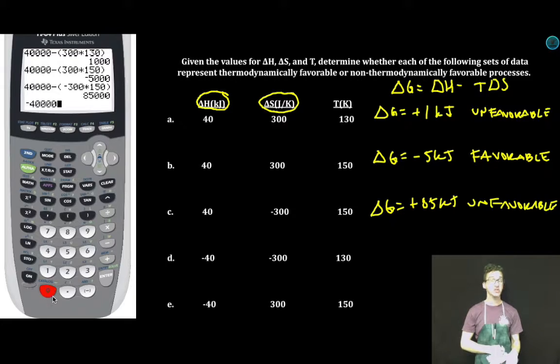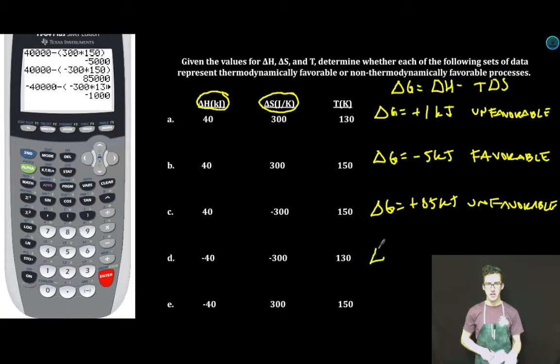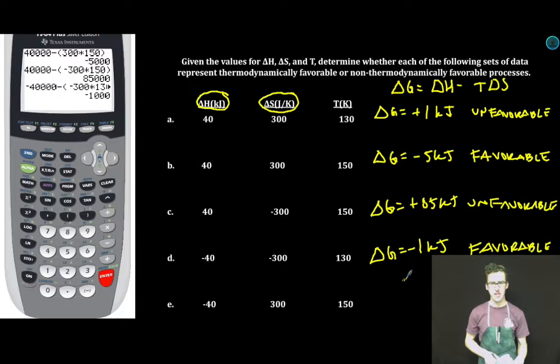Again: negative 40,000 joules minus parentheses 300 times 150 close parentheses. Enter: delta G equals negative one kilojoule. Favorable. Negative delta G tells me so.